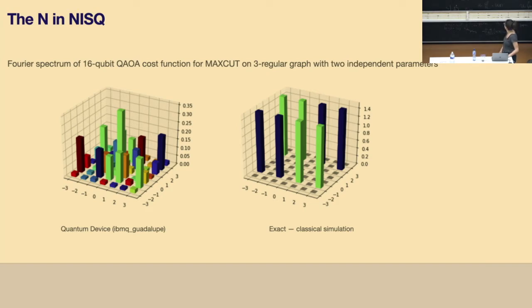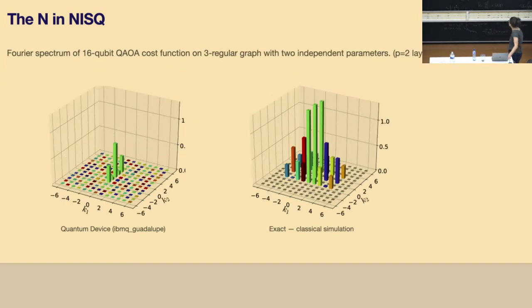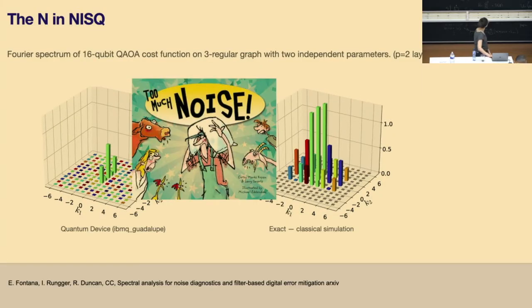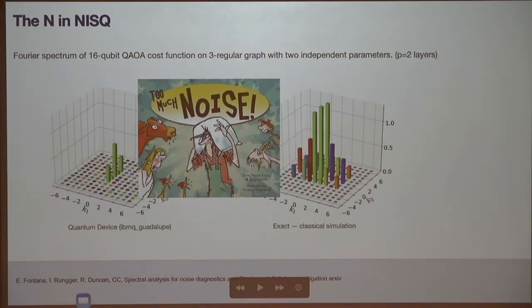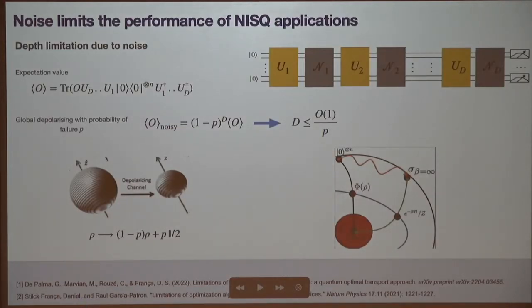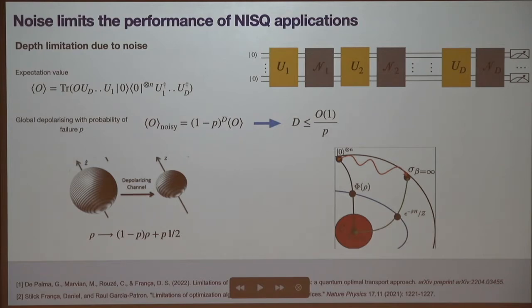What happens if we increase the depth? This is one layer — if you double the depth and look at a different spectral resolution, the noise-free spectrum doesn't look anything like the device output. This is happening because you're reaching the coherence limit of your device. If you look at a simple toy model where after every layer you apply a global depolarizing channel — making your input state more mixed by mixing it with probability p with the maximally mixed state — then after many rounds the noisy expectation value will decay exponentially with depth.